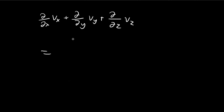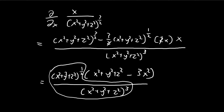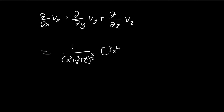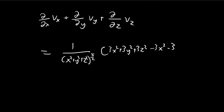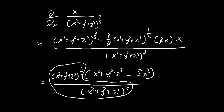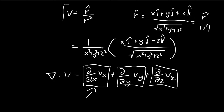So let's keep the common denominator — (x squared plus y squared plus z squared) to the 5/2 — out front. In the numerator, we have three copies of (x squared plus y squared plus z squared) from the three components, minus 3x squared, minus 3y squared, minus 3z squared. This cancels out perfectly, and so we conclude that the divergence is equal to 0.